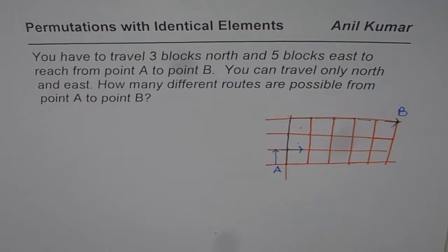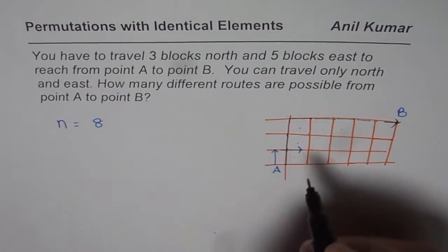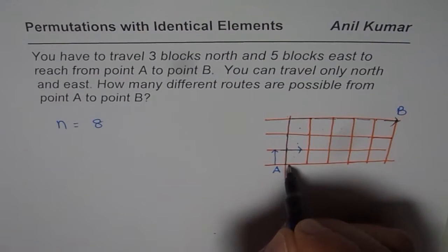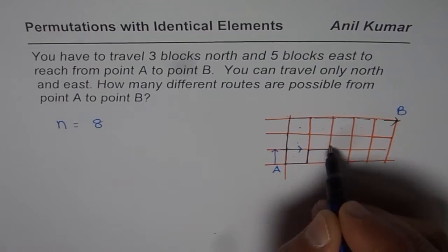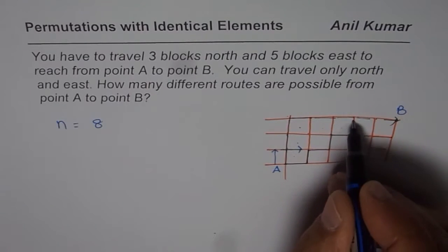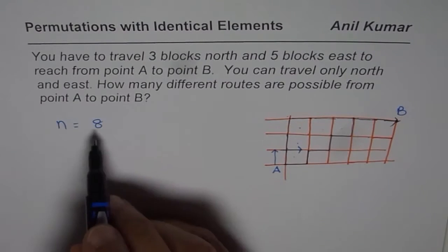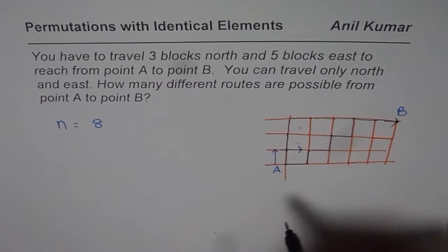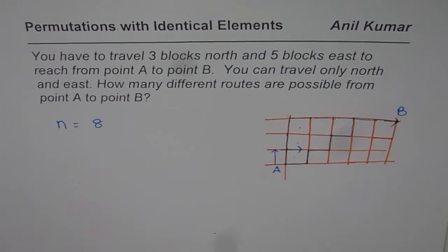So what you have in this case is N equals 8. Even if you take a different route — say you go east 1 step and then go north — effectively what you will find is you are going to travel through 8 different units. So N is 8; you may take any path.